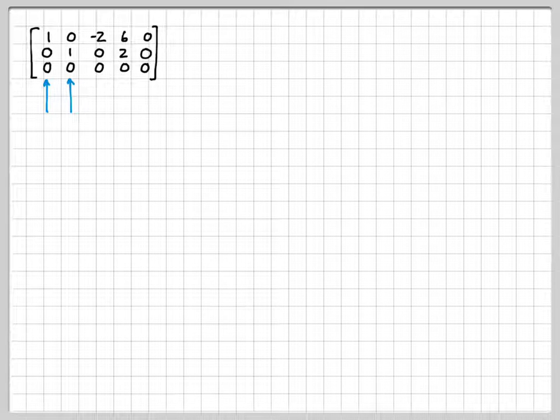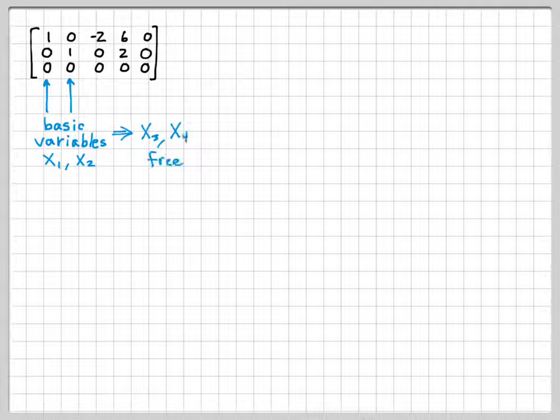I can look at this. I have some pivots right here, obviously, in the first two columns. So those are my basic variables. X1 and X2 are basic variables. But X3 and X4, since they don't have pivots, those are going to be free variables. So this system of equations is very much over-determined. I only have three equations, but four unknowns, so we knew something like this would happen. I'd end up with some free variables.